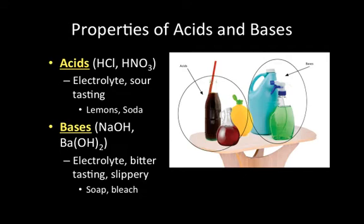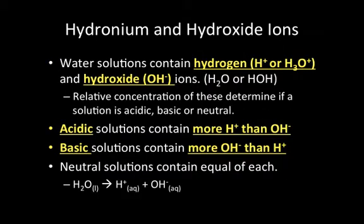What makes an acid an acid and a base a base? Water solutions contain both a hydrogen ion (H+) and a hydroxide ion (OH-). To determine how acidic or basic something is, we look at the relative concentration of these two ions. If there is more H+ than OH-, the solution is acidic. If there is more OH- than H+, the solution is basic.